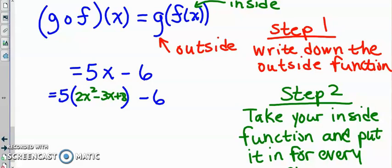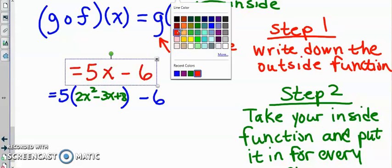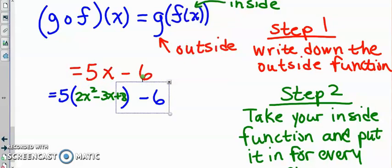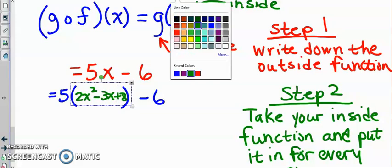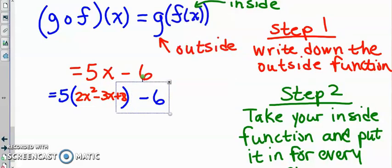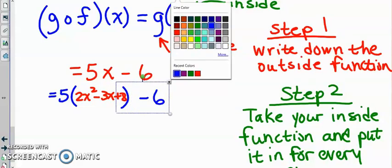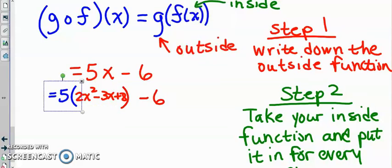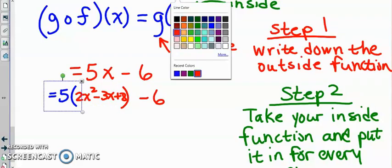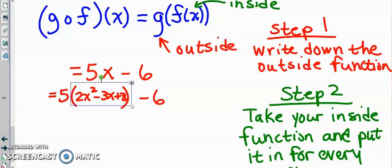All right, so we said first step is write the outside function out and that's what we did here. And let me change these colors here so it matches up with our steps right there. There's colors for the steps - oh no, this must be red here, it's supposed to be red here on the inside must be green.